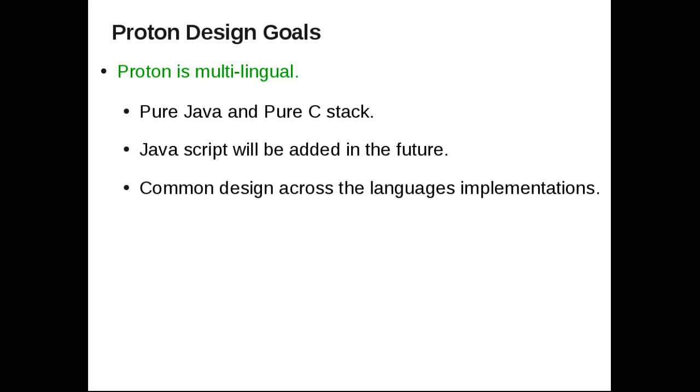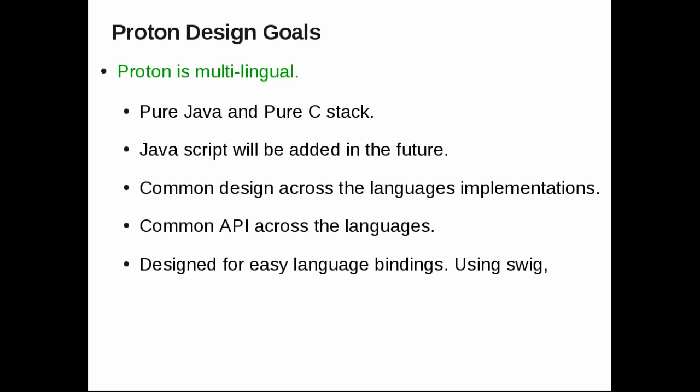This naturally leads to a common API across all the languages. This is a key feature because once you are familiar with the API, you could easily use any of the language implementations as they are similar — they have the same concepts and the same semantics. We also make it easy for language bindings. Proton provides Python, Ruby, and PHP bindings over the C implementation using SWIG.